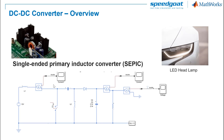Let us say that we want to design a digital controller for a DC-DC power converter that regulates the voltage to light the LEDs in a car headlamp. We use the SEPIC topology, where SEPIC stands for single-ended primary inductor converter. This is essentially a boost converter followed by a buck-boost converter and can increase or decrease source voltage as needed.